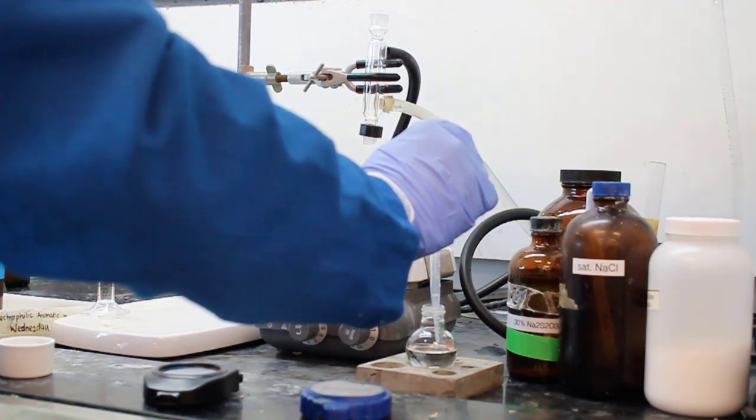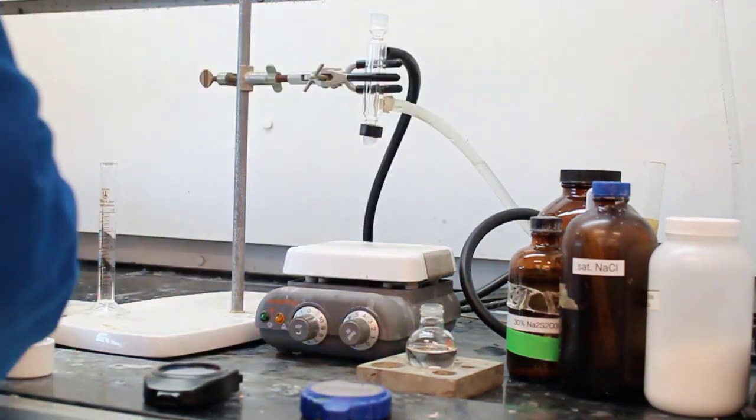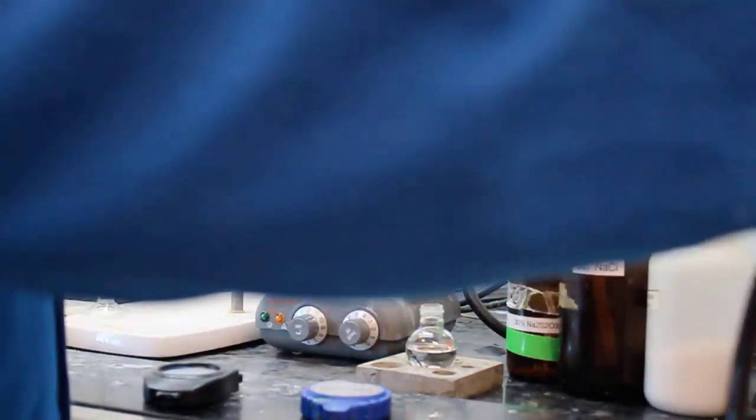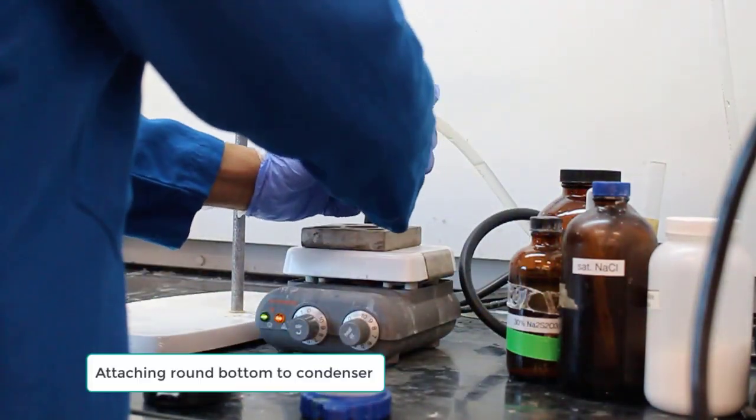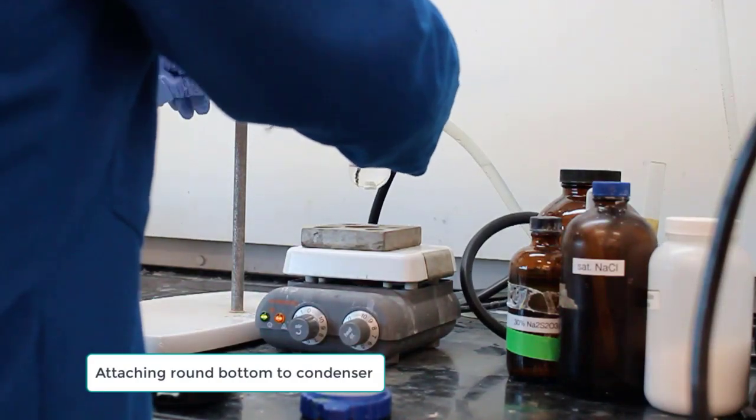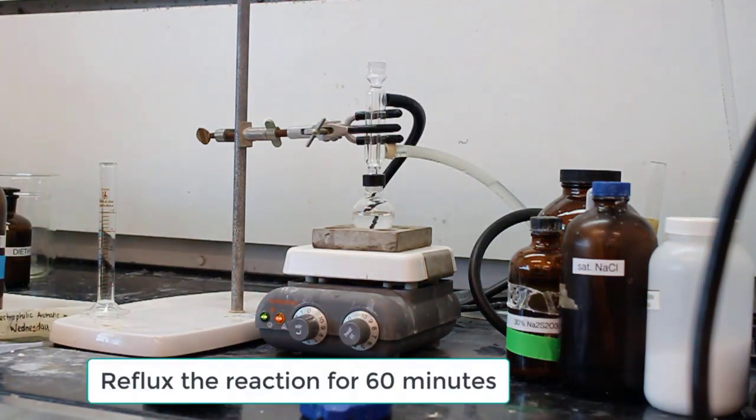Having both of our reagents mixed together with the sulfuric acid, this can now be refluxed. The round bottom flask is going to be connected to that condenser on the ring stand. Note the solution color is very translucent, almost perfectly clear.